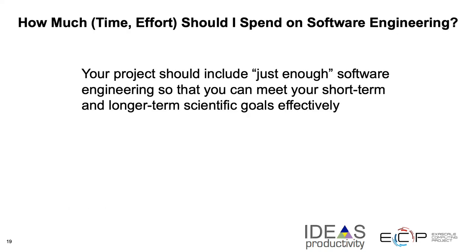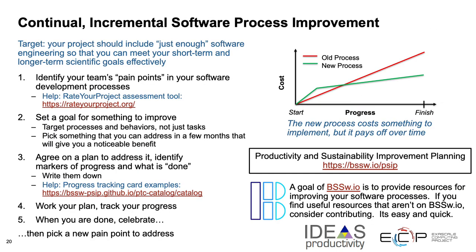The question you might ask yourself is: how much time should I spend on software engineering? You may be thinking we cannot adopt all the best practices, and you are probably right. You need to balance when and where you should spend your time. So your project should include just enough software engineering so that you can meet your short-term and your longer-term scientific goals effectively. We recommend that you improve your software process in a continuous and incremental fashion. You may have some process that has a continuous cost, but if you were to invest a little bit of effort upfront, you could flatten that curve and save time and costs in the long run.